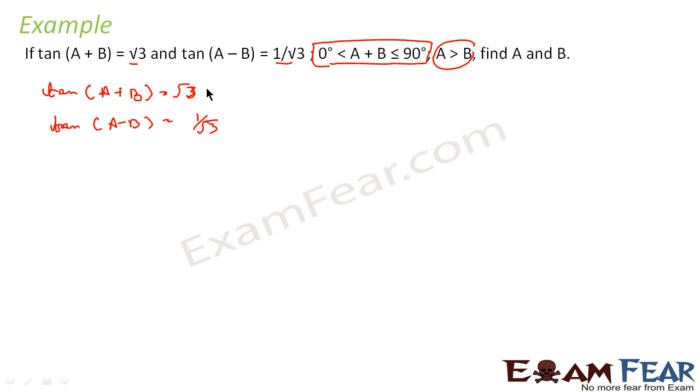Thus I can find the value of A + B. In this case, √3 is nothing but tan 60°. And 1/√3 is nothing but tan 30°. So if we now compare these two equations, A + B = 60°. Because tan(A + B) = tan 60° and tan(A - B) = tan 30°, so I write A - B = 30°.